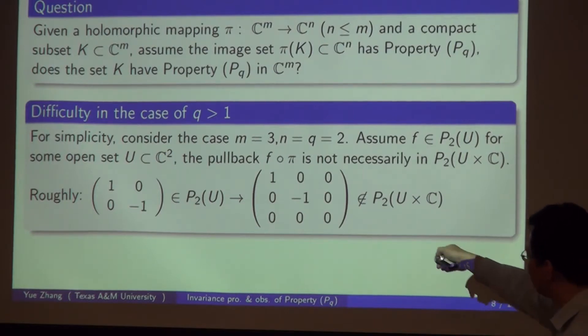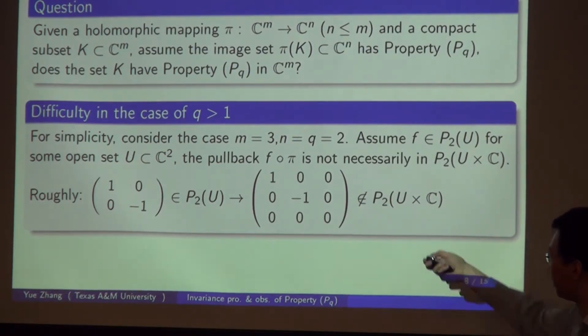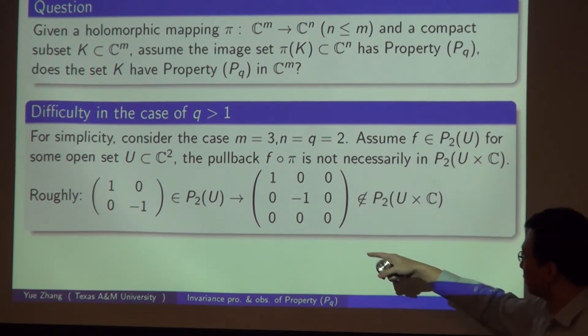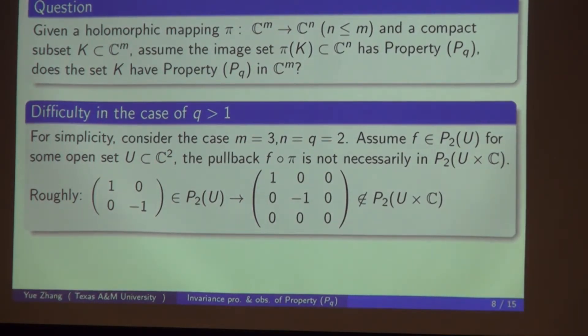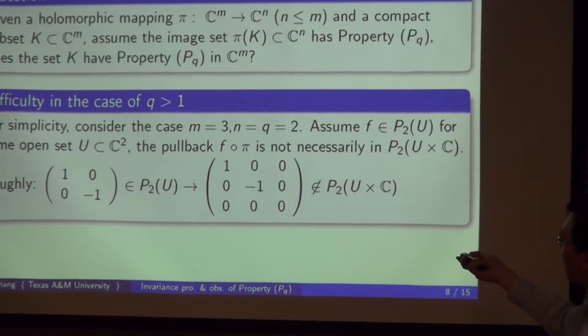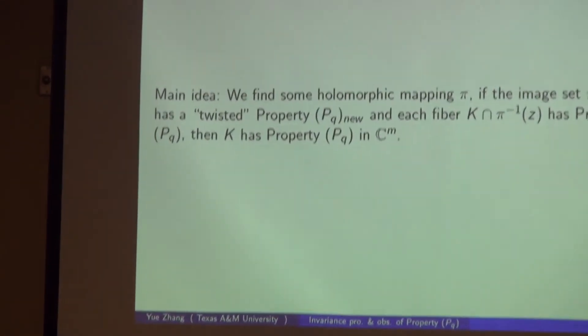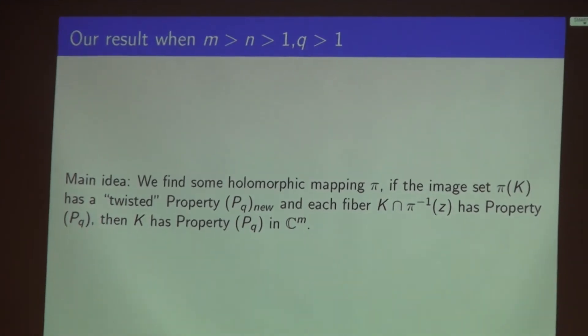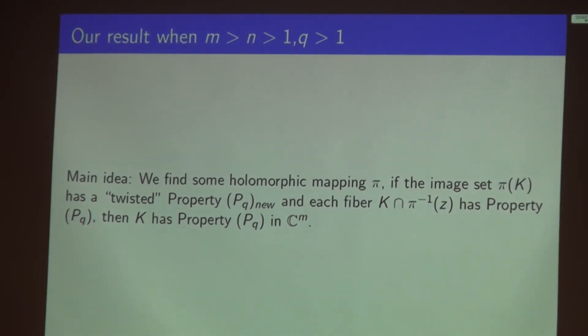It's no longer in P_2(U × C). If you look at the sum of any two eigenvalues in the complex Hessian matrix, the second diagonal item and the third diagonal item, the sum of them is negative, so it's no longer positive, so it's not in P_2(U × C). The main idea of my work is I try to find some holomorphic mapping pi that really does the job, so we can generalize Sibony's argument and result to higher level forms.